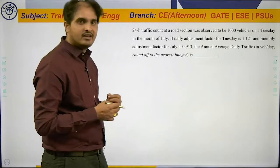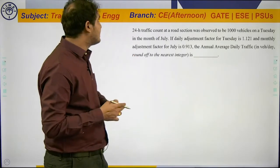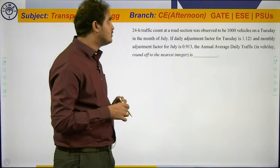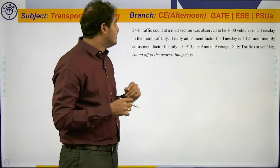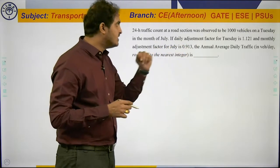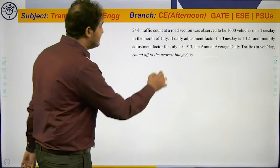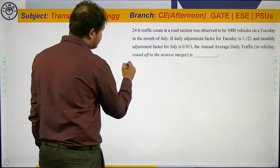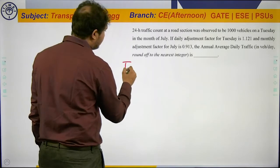This equation on transportation engineering states: 24-hour traffic count of a road section was observed to be 1000 vehicles on Tuesday. If daily adjustment factor for Tuesday is 1.121, first we need to work out traffic for